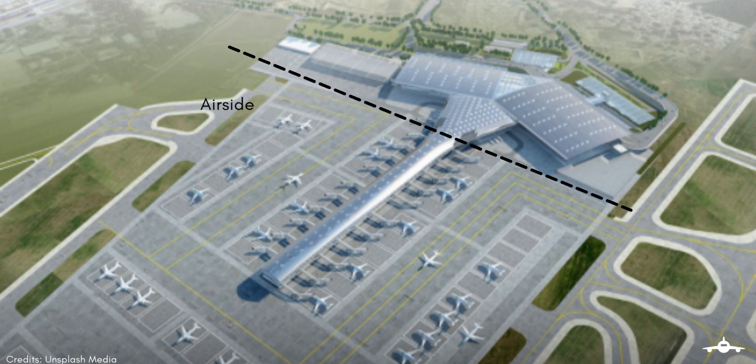Not many of you must be familiar with the fact that an airport has two sides: air side and land side. Air side is the area or space of the airport where aircraft movement takes place. It is a restricted area, accessed by authorized personnel only.